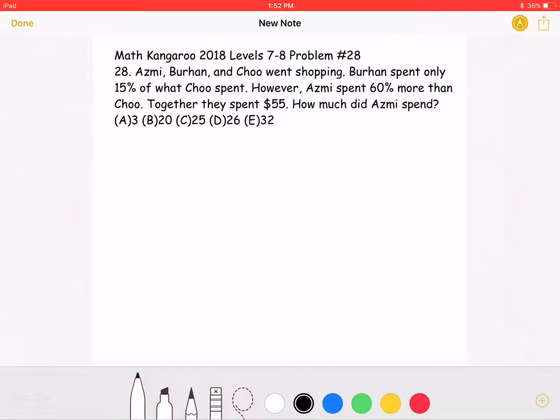Let's start by marking the amount that Cho spent as being X. This means that Burhan must have spent 0.15X because in the problem it states that he spent 15% of what Cho spent.